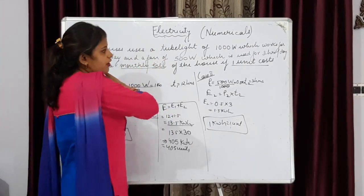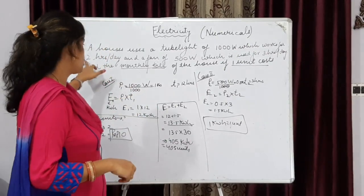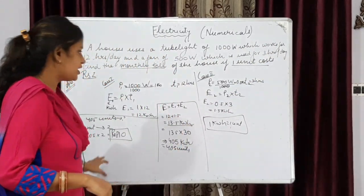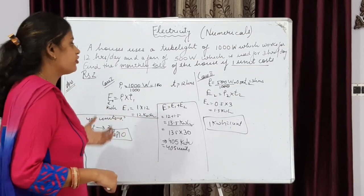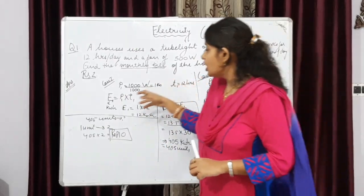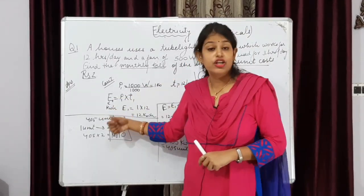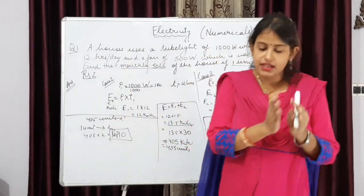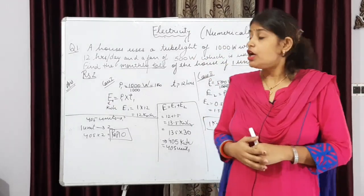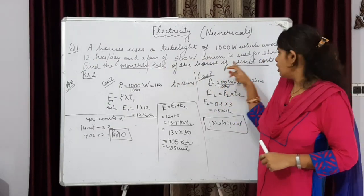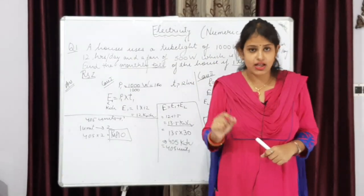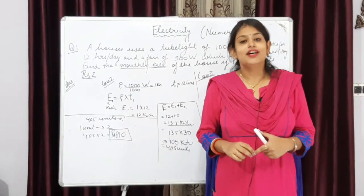Rs. 810 is the monthly bill for this home, provided that the tube light works 12 hours per day and the fan works 3 hours per day. This is the method by which we can solve questions on electrical energy. The important thing to keep in mind is: when we have to use the formula for energy in kilowatt-hour — whenever a unit-related question or a bill/rupees question comes — you have to express electrical energy in terms of its commercial unit, kilowatt-hour.